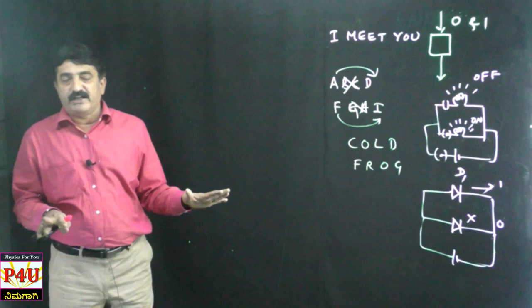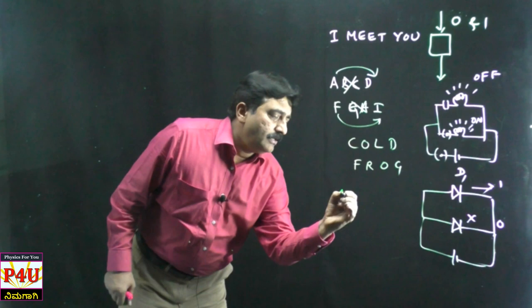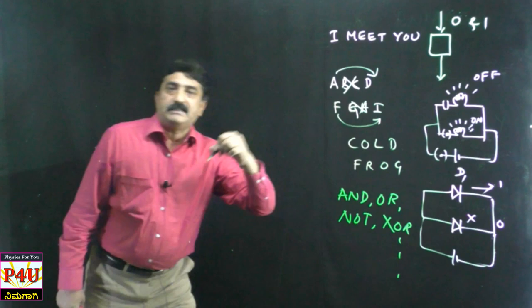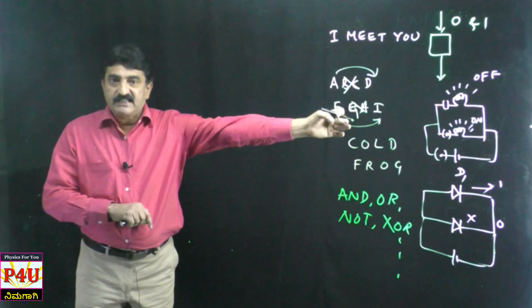Zero means off and one means on. These zeros and ones are used to design what are called gates. Well-known gates are AND gate, OR gate, NOT gate, XOR gate, and so on. We have a well-designed algebra called Boolean algebra for this. So Boolean algebra, algorithms, gates, and zeros and ones — classical bits — are all part and parcel of our classical computers.